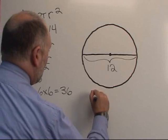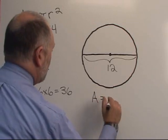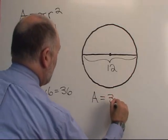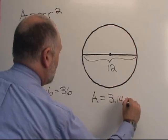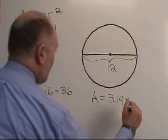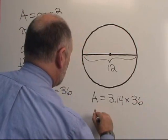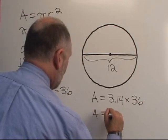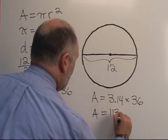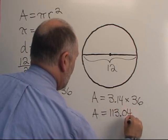So the area of this circle is a equals pi, 3.14, times r squared, which is 36, which gives us the value of 113.04.